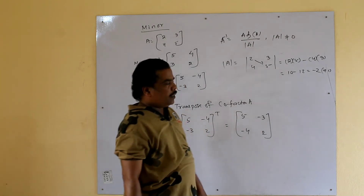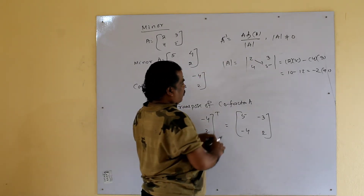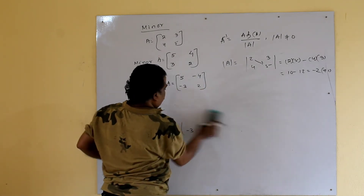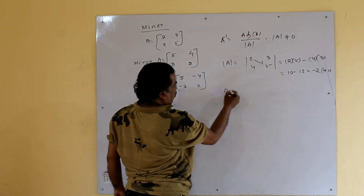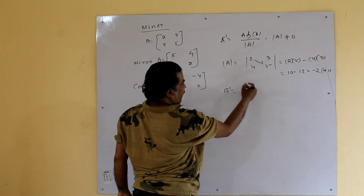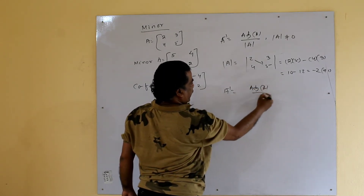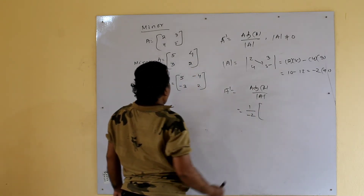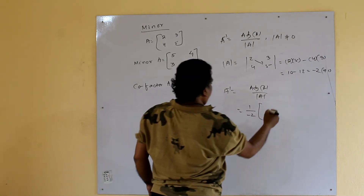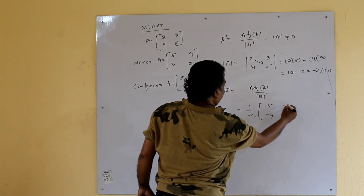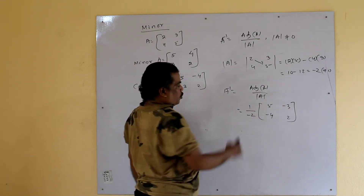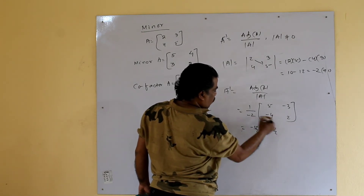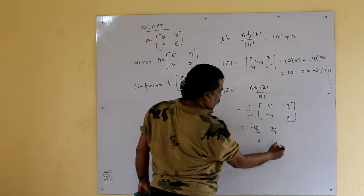Since the determinant is not equal to 0, we can find A inverse. A inverse = adjoint A divided by determinant = (1/(-2)) × [5, -3; -4, 2]. So A inverse = [-5/2, 3/2; 4/2 → 2, 2/2 → -1] — that is, we divide each element of adjoint A by -2.